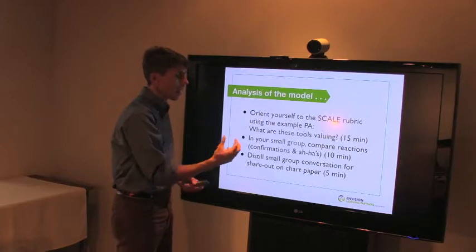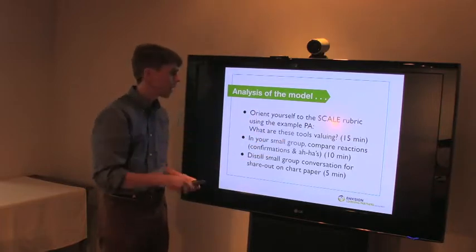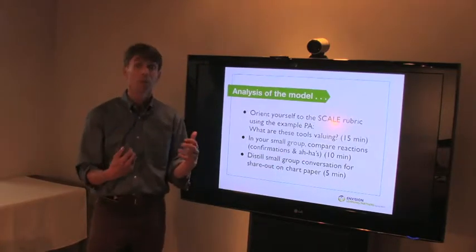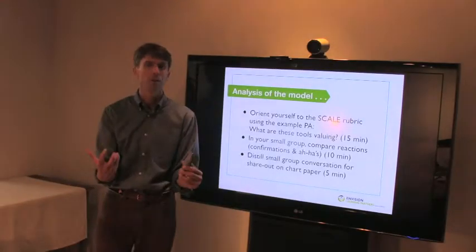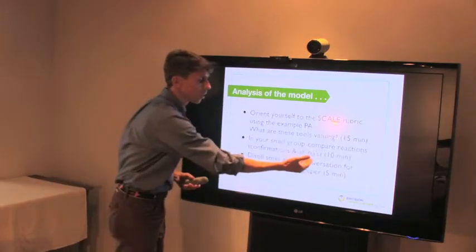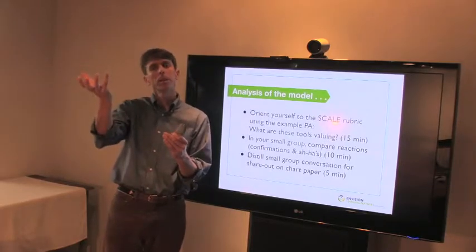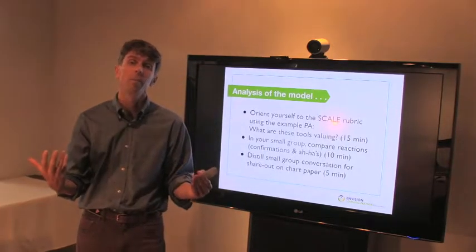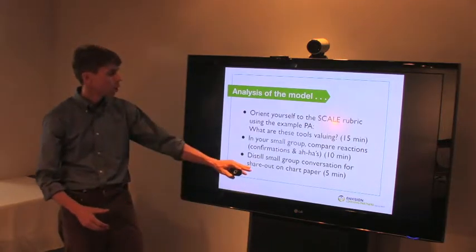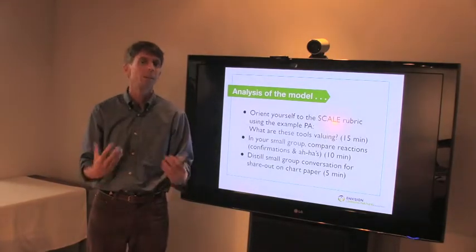After 15 minutes, call time and have them get into their small groups and do a whip around, comparing reactions to what they observed in the prior 15 minutes. Think of this as a combination of confirmations and ahas — a lot of these are talented educators already doing these things, so they'll see things in the rubric that validate current practice, but there are also ahas, like realizing real-world authenticity is called out as something to aspire to. People can share both sides of that equation for 10 minutes. Then, with five minutes left, prompt the group to prepare to share out to the larger group.